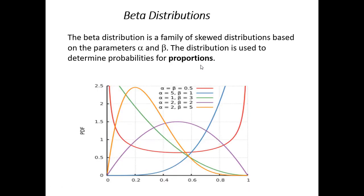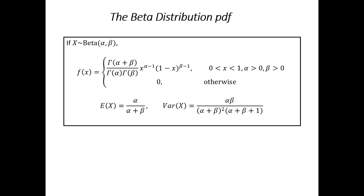Okay, let's take a look at some beta distributions. So, similar to the gamma distribution, the beta is also a family of, we could say, skewed distributions, and based on two parameters, alpha and beta. But the big difference here is that the distribution is used to determine probabilities for proportions. Okay, so things like defect rates, or the probability, let's say, a baseball player has a certain batting average. So, we're interested in probabilities for proportions. So, that distinguishes the beta distribution.